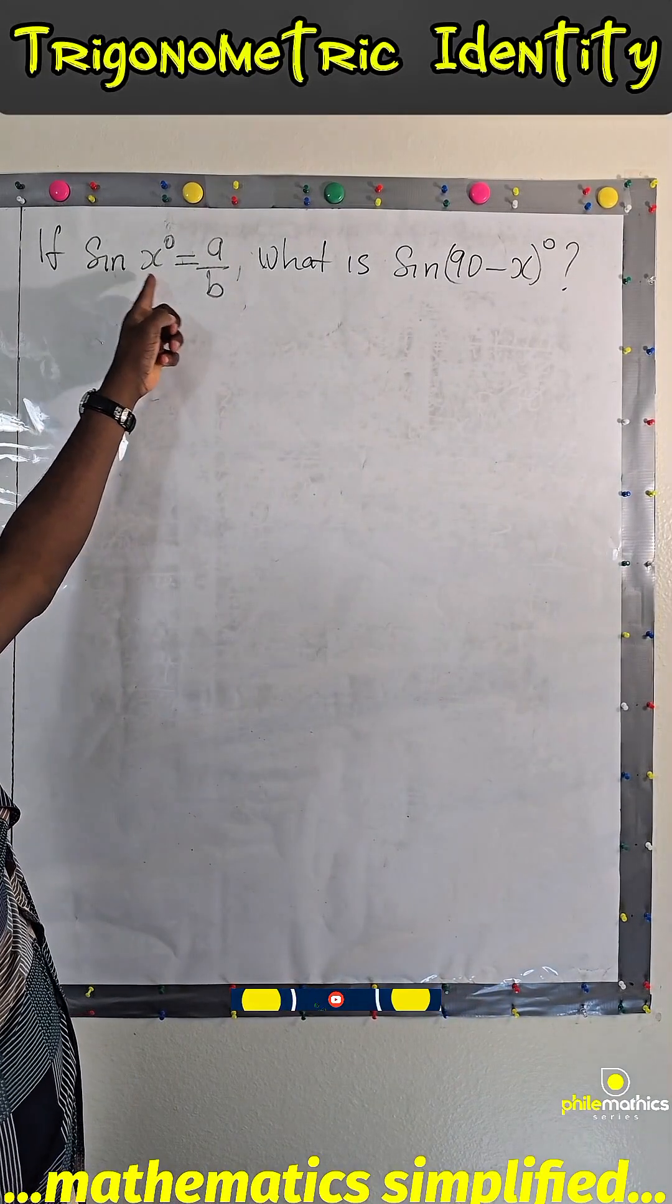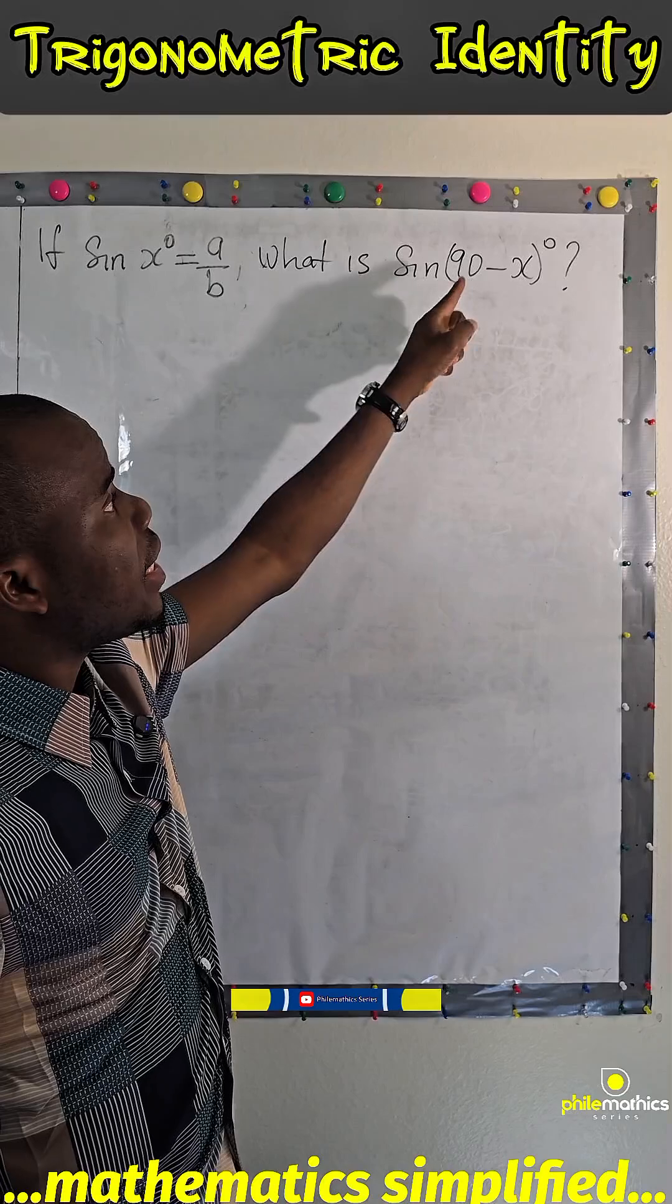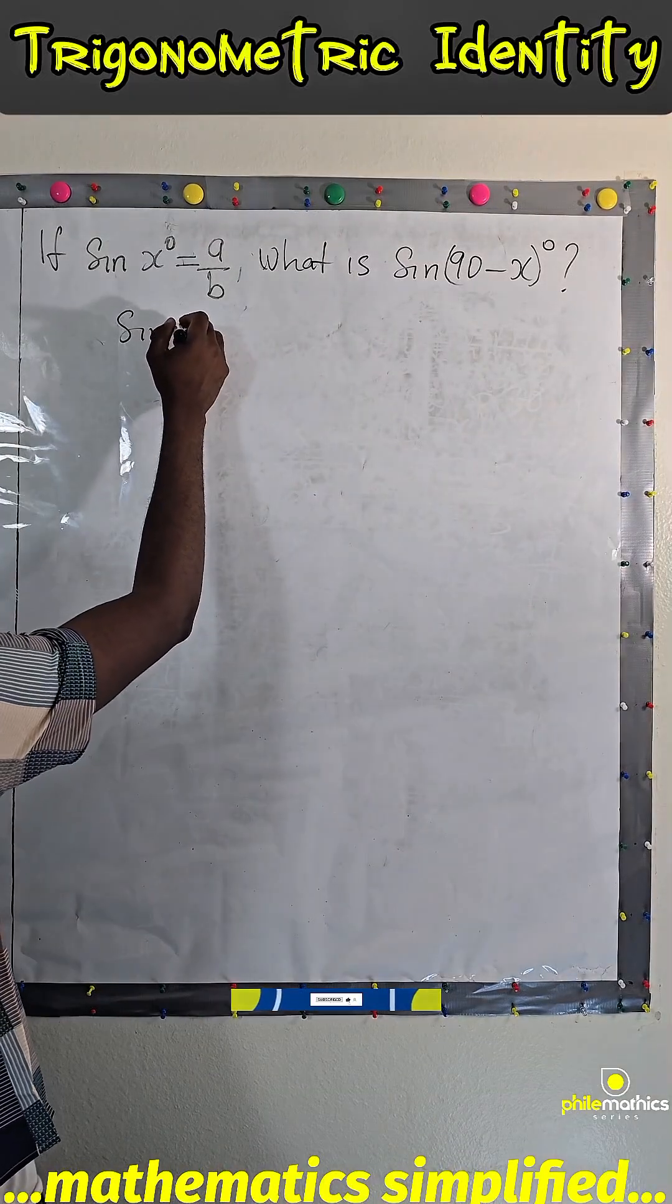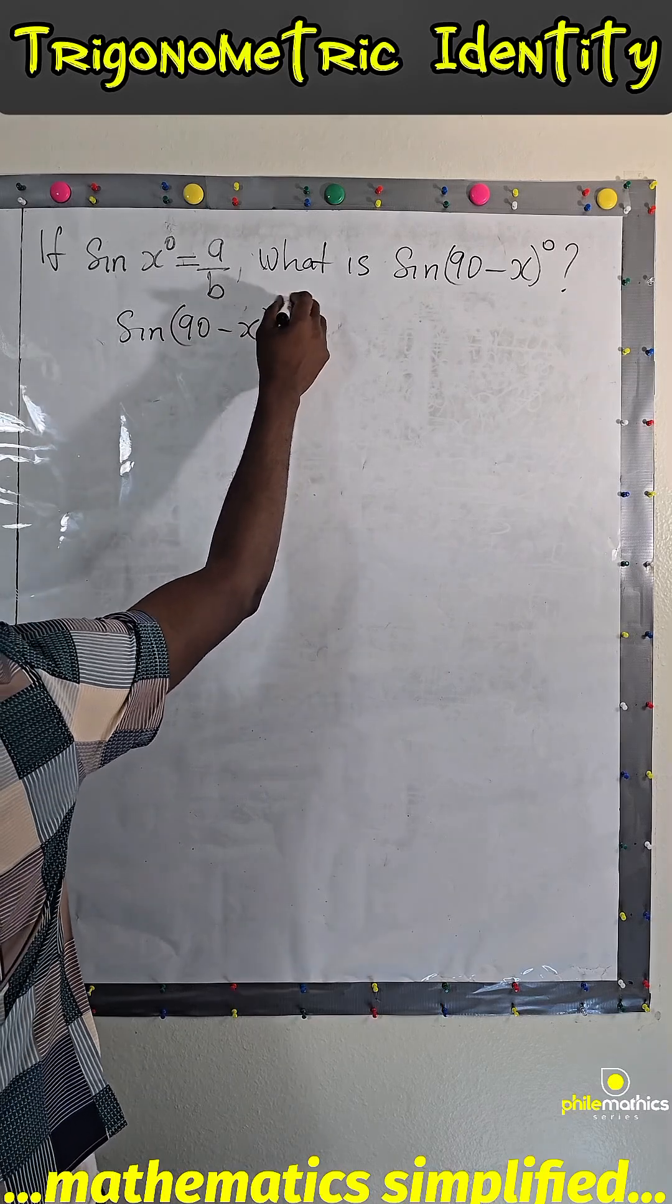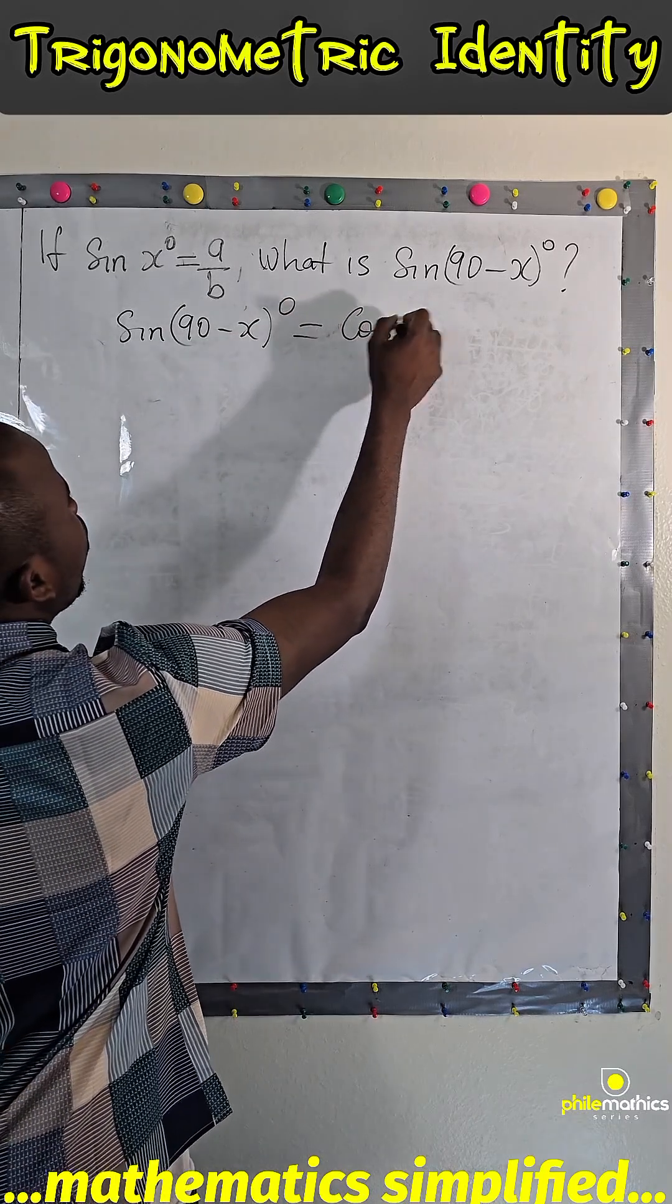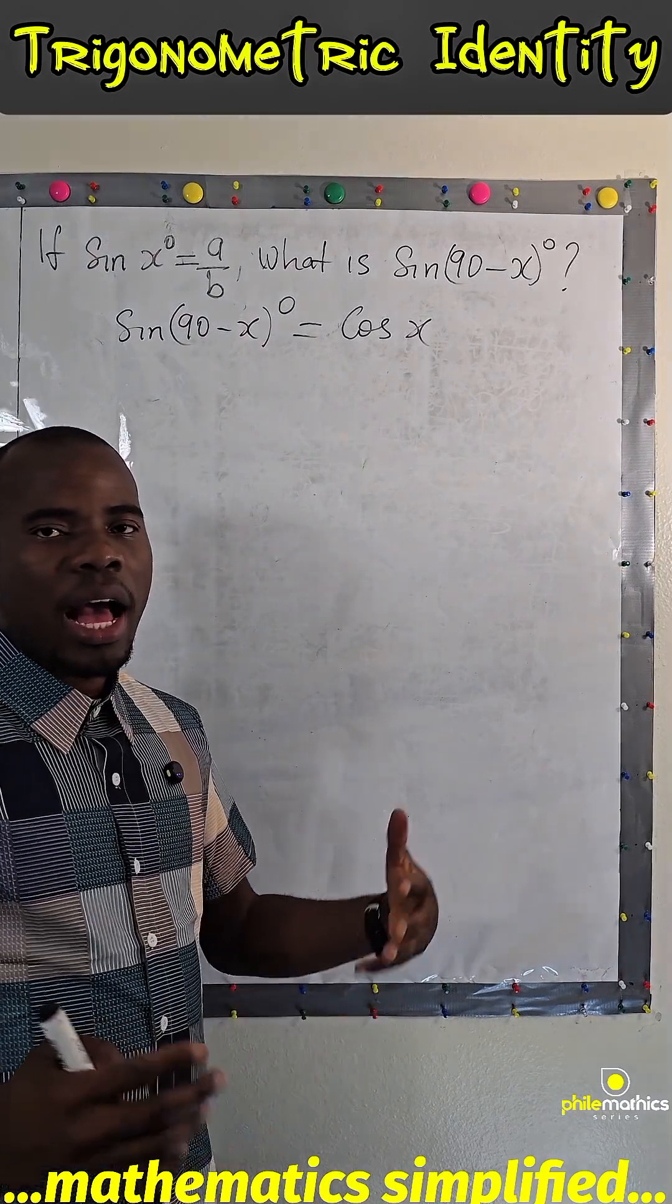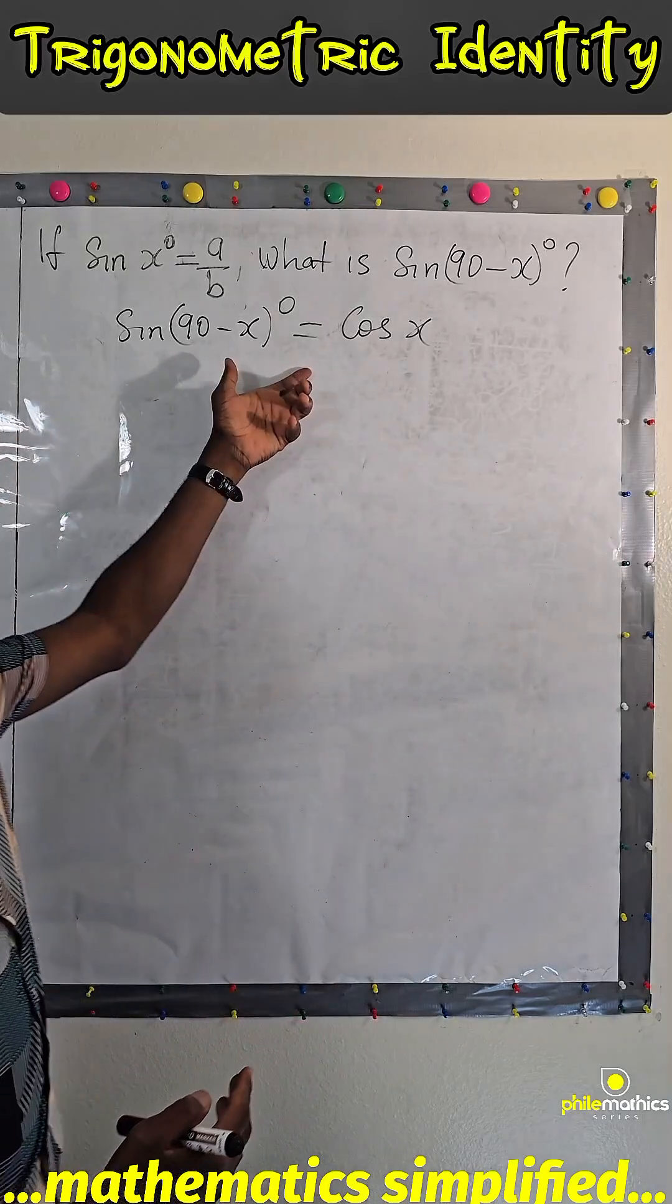If sine x equals a over b, what is sine 90 minus x? Recall that sine 90 minus x is the same as cos x because sine and cosine are complementary.